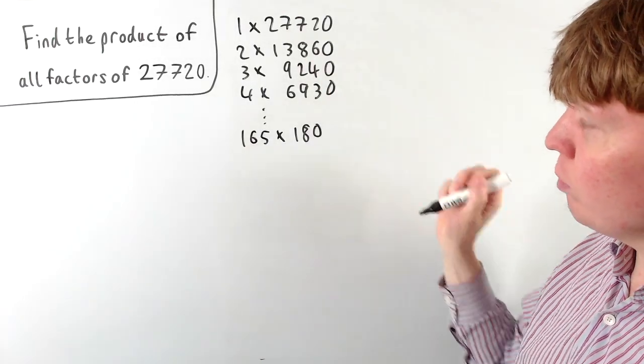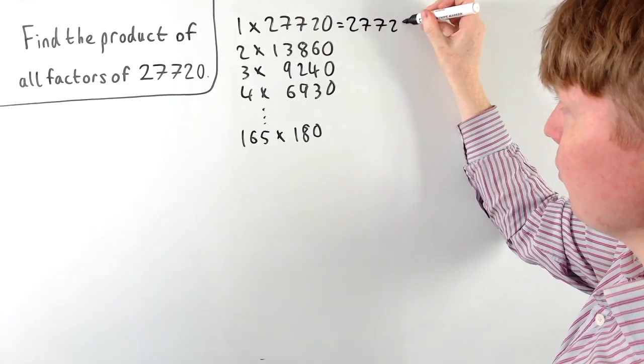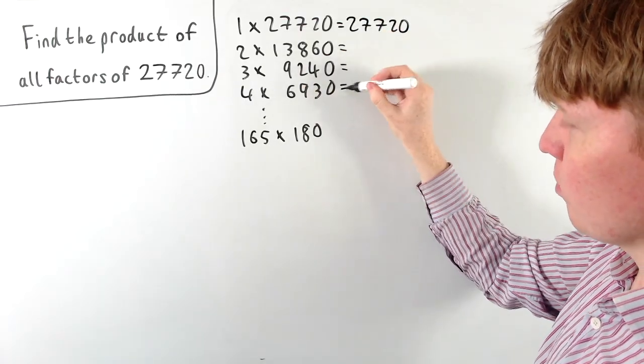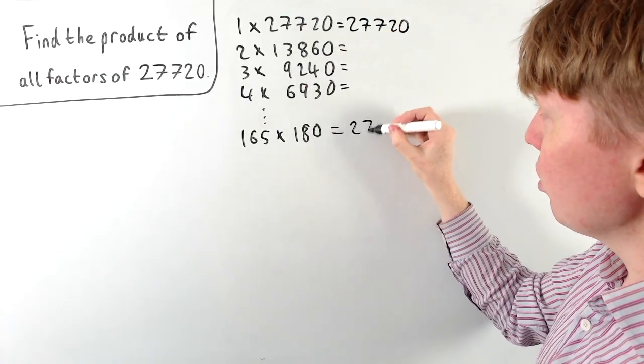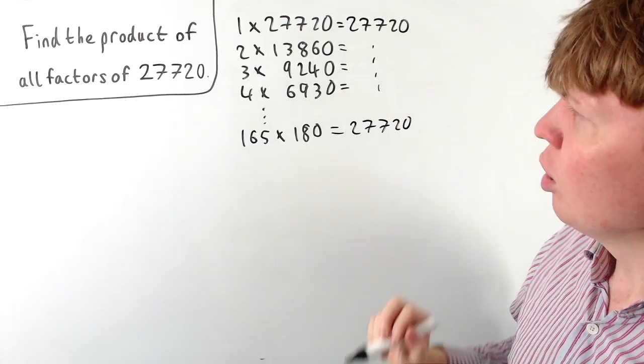And you might spot, because we've written them in factor pairs like this, each of these pairs multiply together to give our original number. So we get the same answer for each of these products just by design, because they're all just going to be our original number. So you get the same sort of structure all the way through.